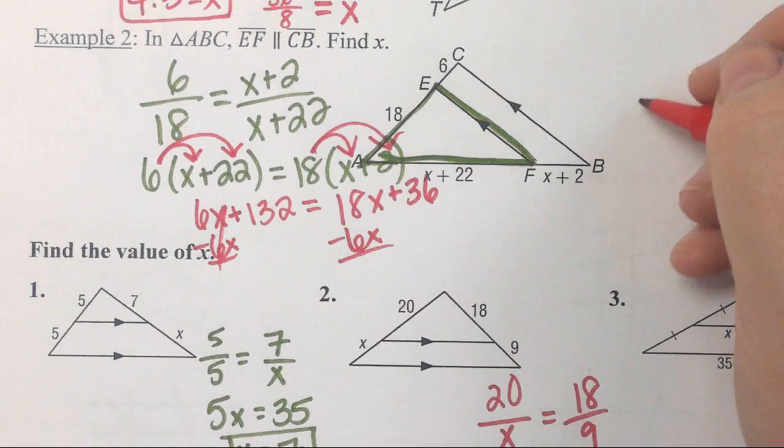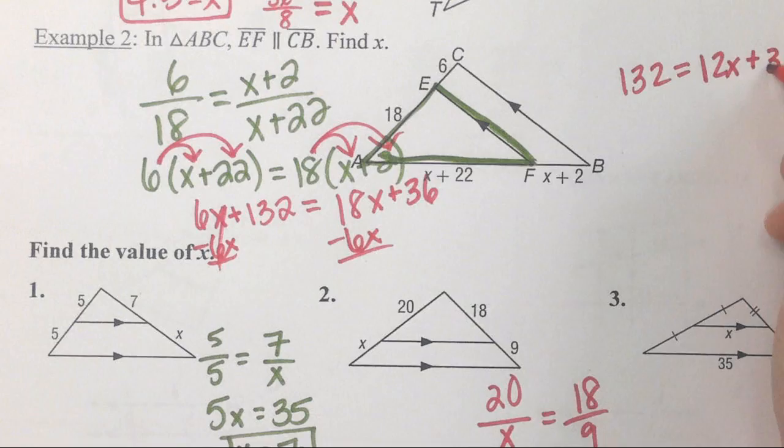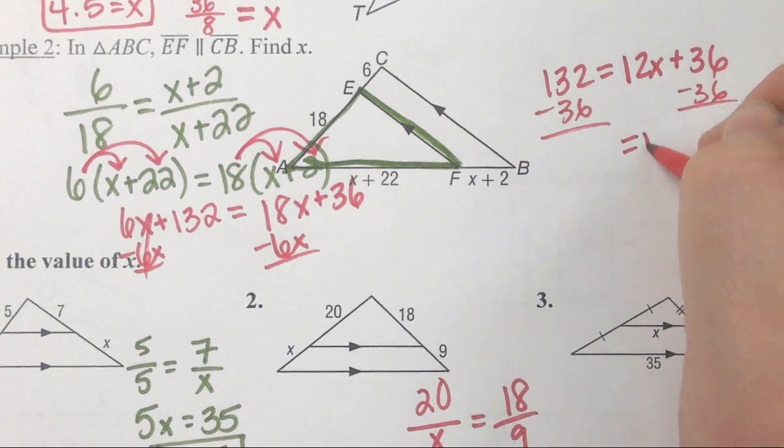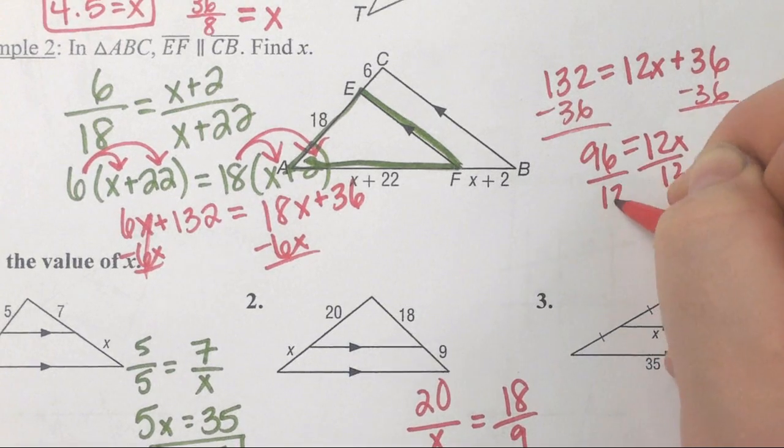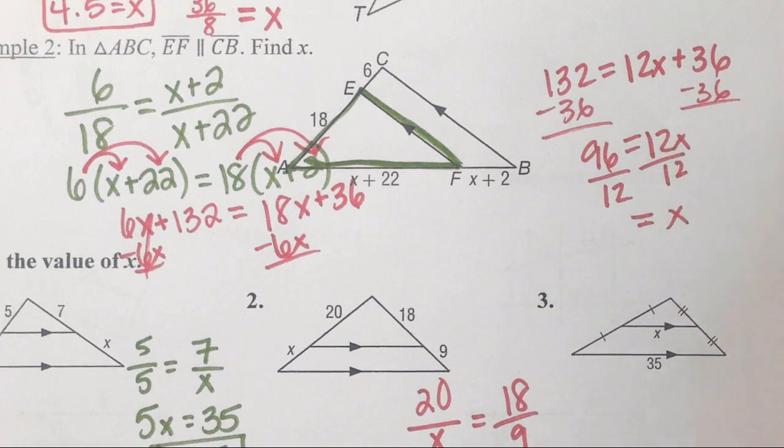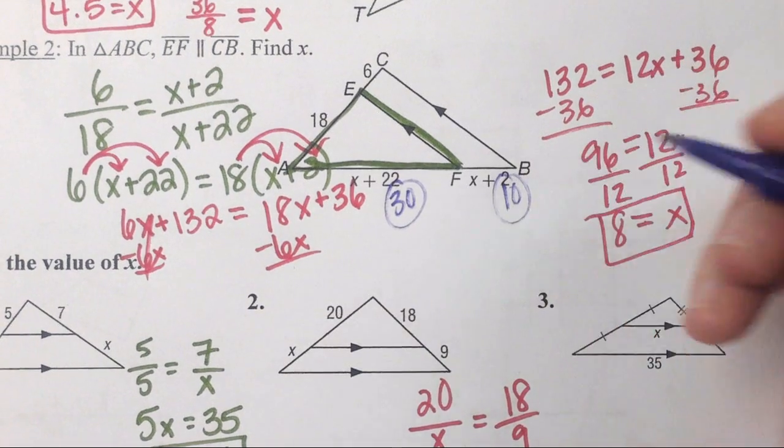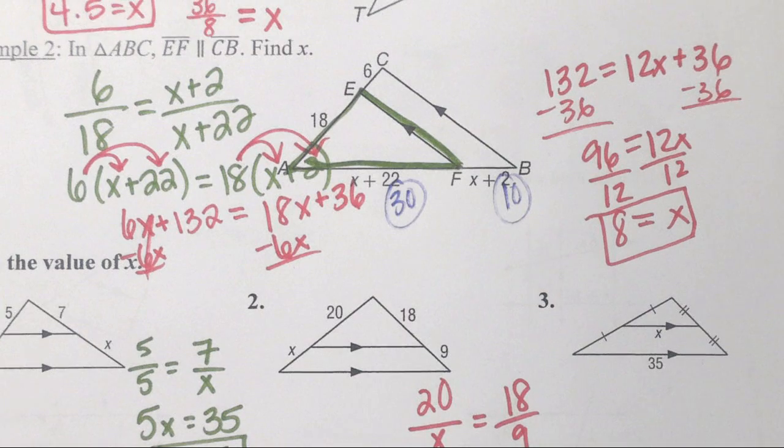So I have 132 equals 12x plus 36. I subtract 36, I get 96 equals 12x. When you divide by 12, I think she's right and you do get 8. Do you have to plug it back in? Do you have to? No. Would it be smart because you're wanting an A? Yes. So 18 divided by 6 is 3. When I plug it back in I get 30 for this one and I get 10 for this one. Well, 30 divided by 10 is also 3, so I know I'm right.